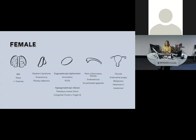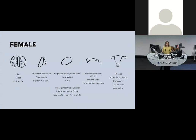At the level of the ovary, you can split into eugonadotropic — dysfunction such as anovulation and PCOS — and hypogonadotropic, meaning premature ovarian failure or congenital causes. For tubal pathology, pelvic inflammatory disease, endometriosis, and perforated appendix can all damage the tubes and prevent eggs reaching the uterine cavity. At the uterine level, fibroids can impair the shape of the uterus making implantation difficult, and you can also have polyps, malignancy, anatomical variation, or Asherman's syndrome — scarring and adhesions after uterine evacuation.